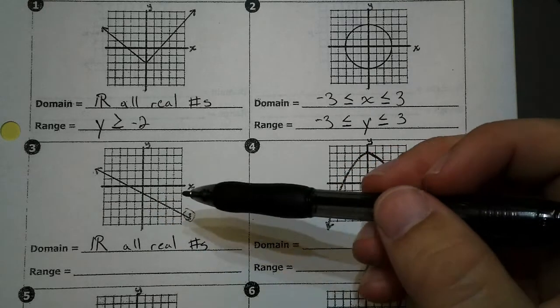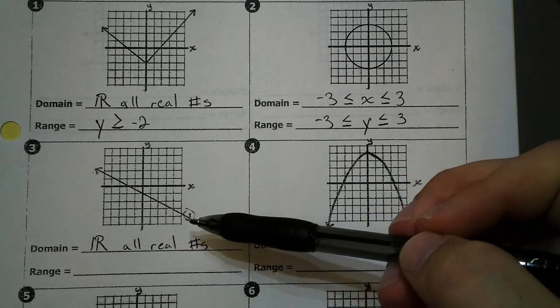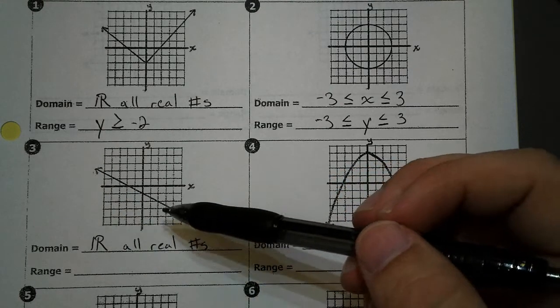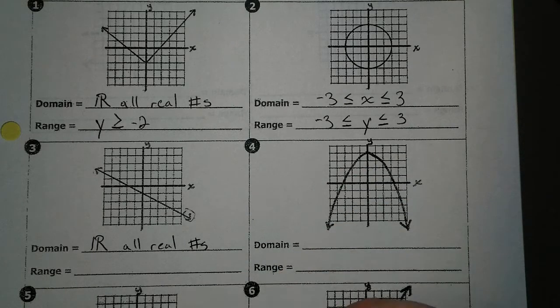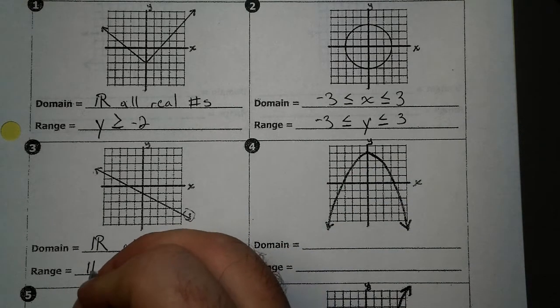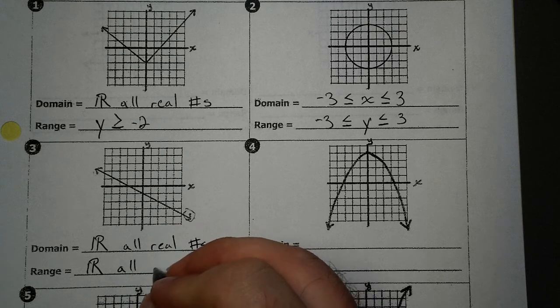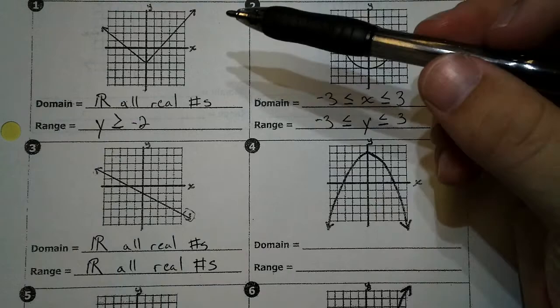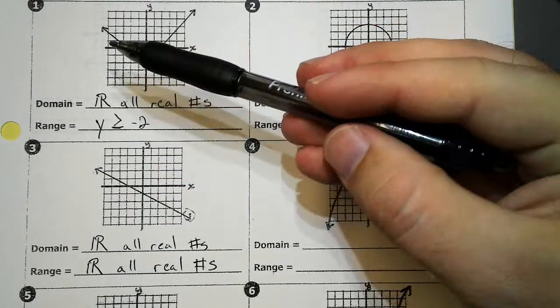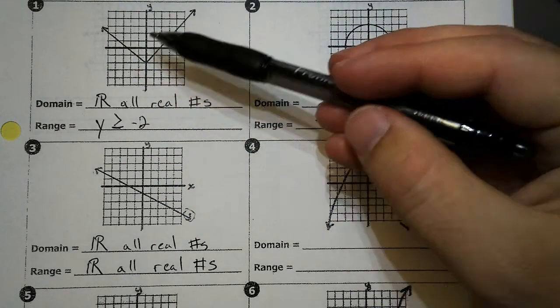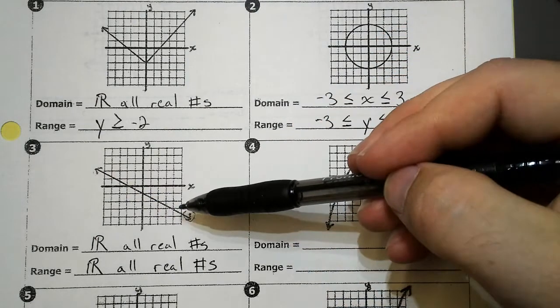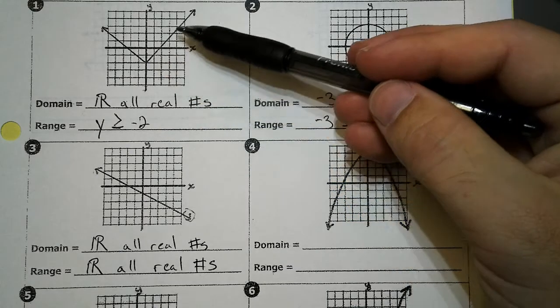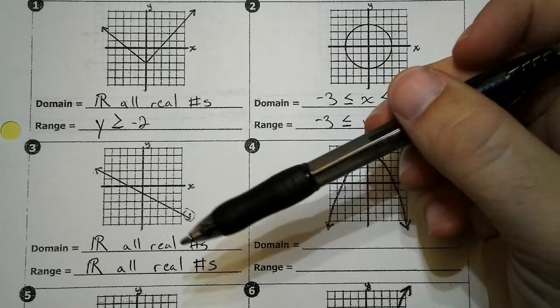Now for our range, scan from the bottom to the top. Well, on the bottom I have an arrow going down. At the top I've got an arrow going up. So this goes down forever and up forever. So this one is also all real numbers. Now before you move on, I want you to compare number one and number three. Both of them have arrows on the end, but these arrows both go up. These arrows, one goes up and one goes down. That's why the range here stopped at negative two and it was the values above negative two, and the range here continues going forever.